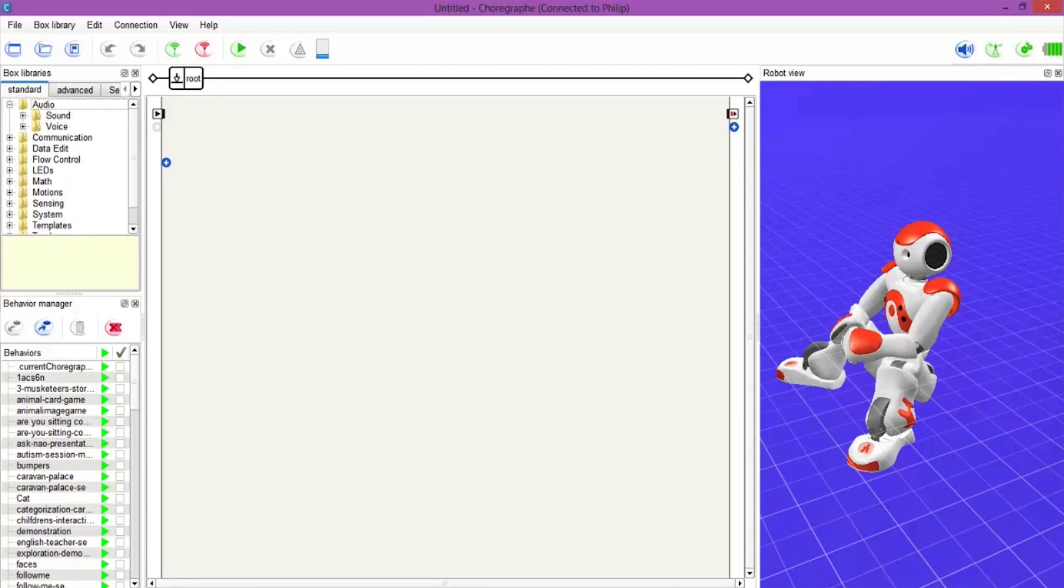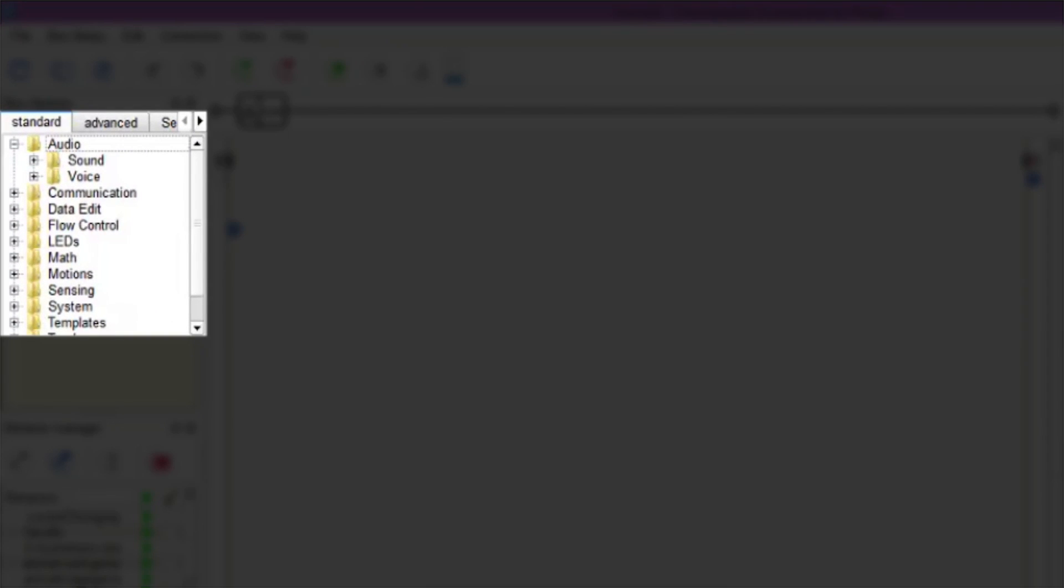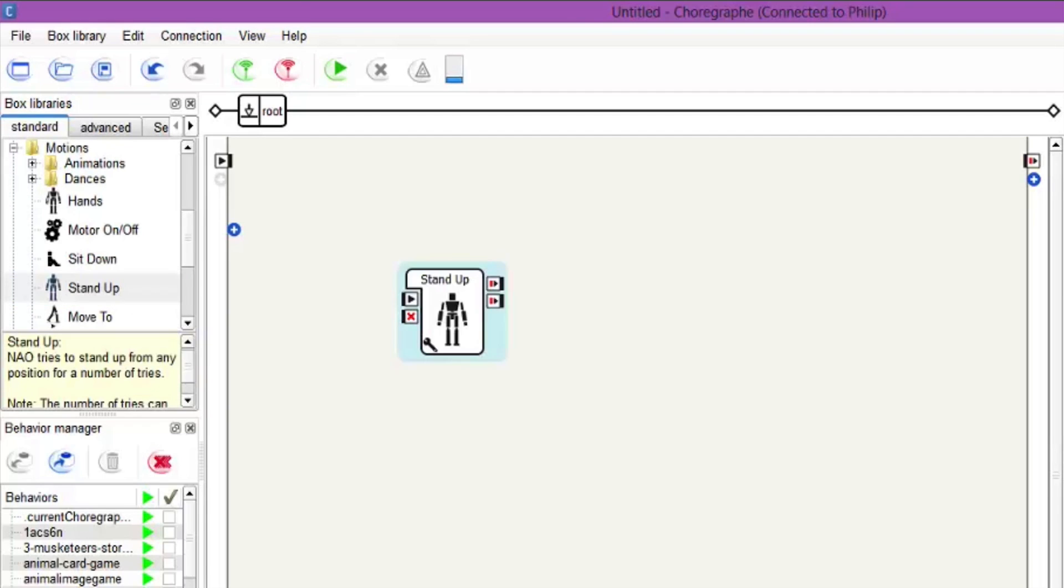So what we want to do is we want to go over to the box libraries as we've talked about before and go over to motions in the standard box. We want to get him to stand up first. Simple stand up behavior. We'll drag that in.